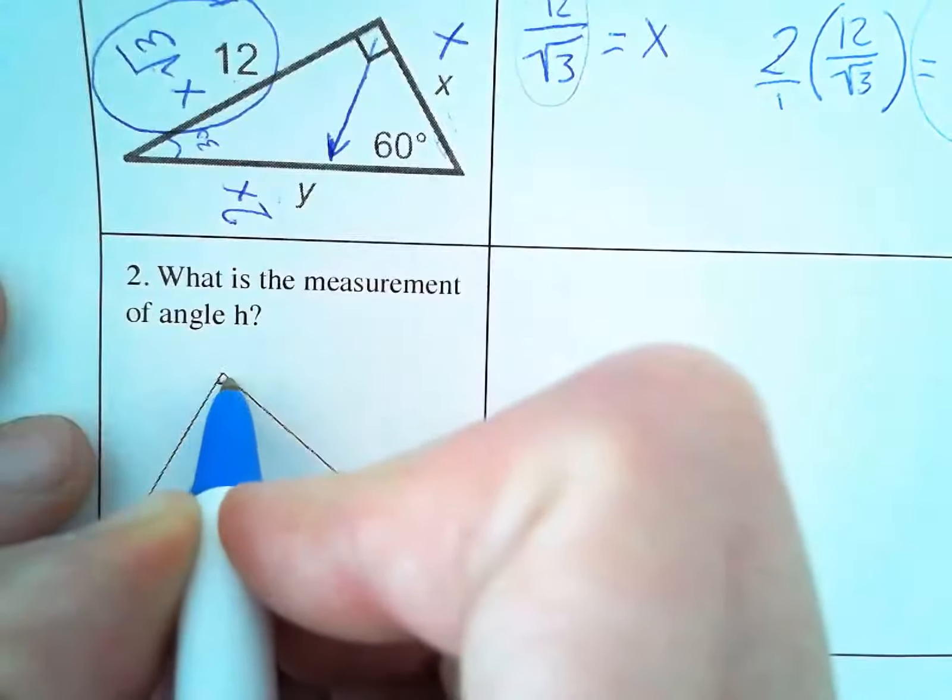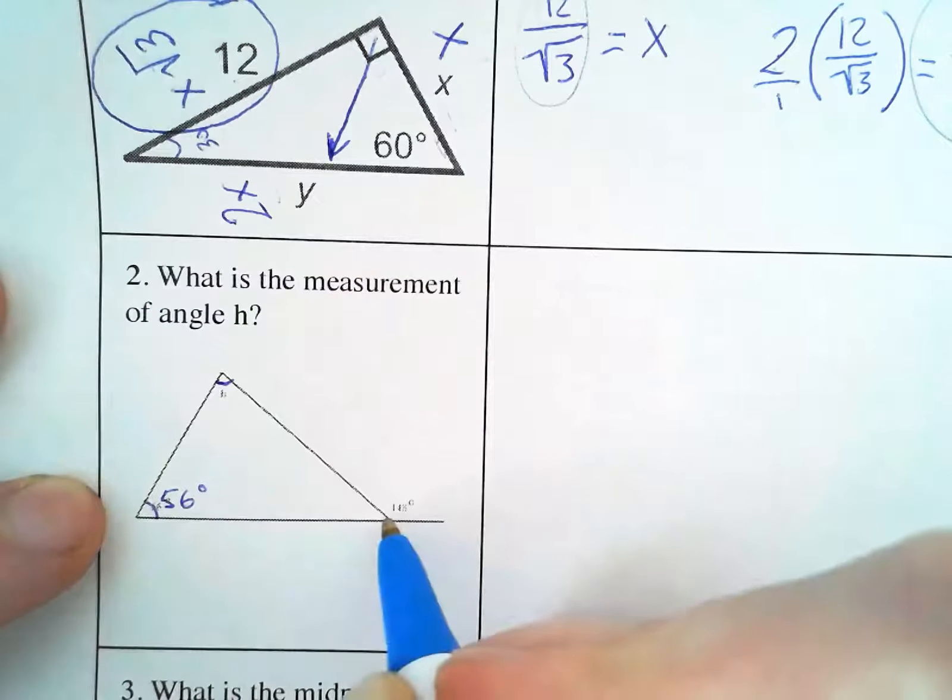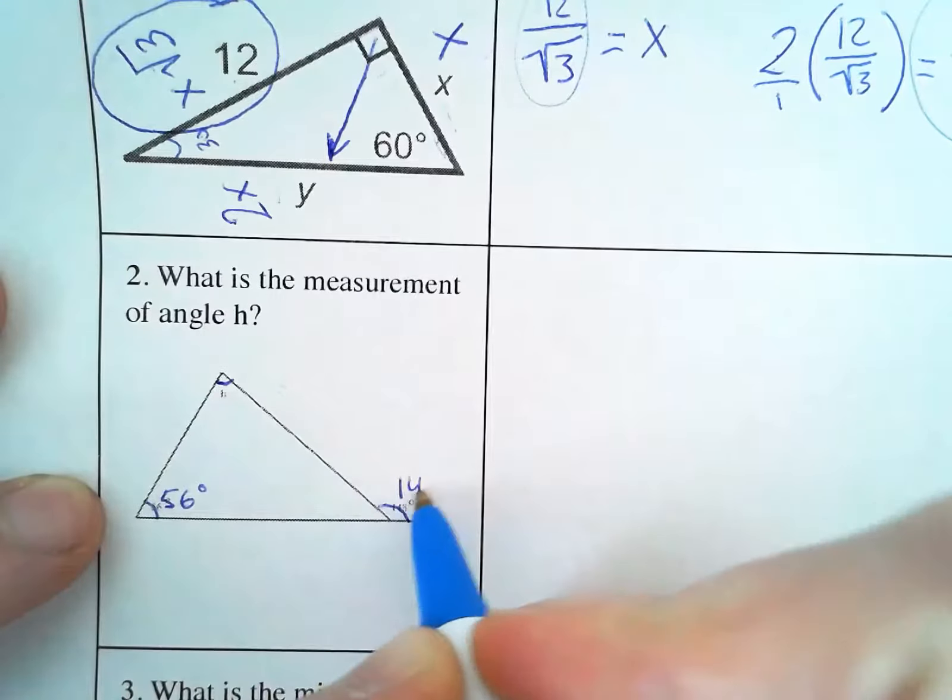So angle H is this one right here. And you can't see this, this says 56. I'm just going to label it a little bit bigger. This one right here is 148 degrees.